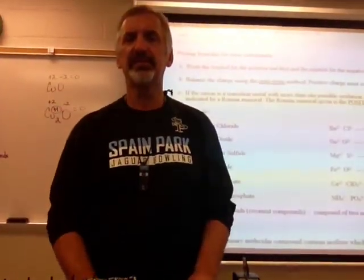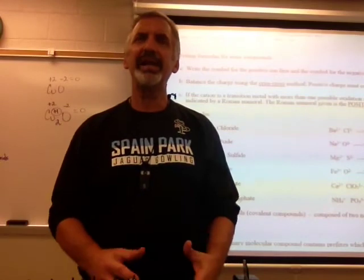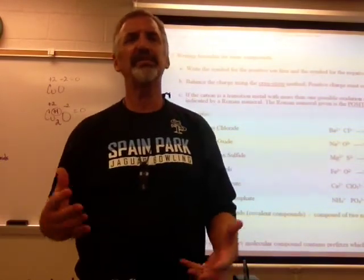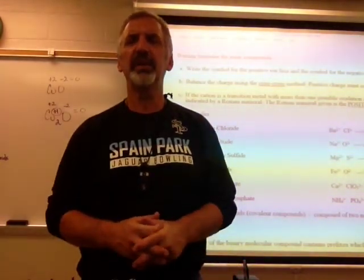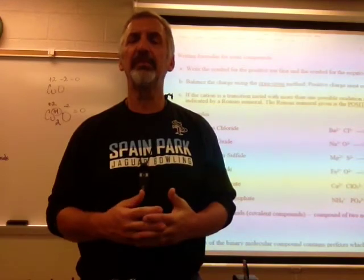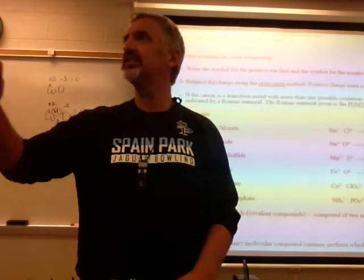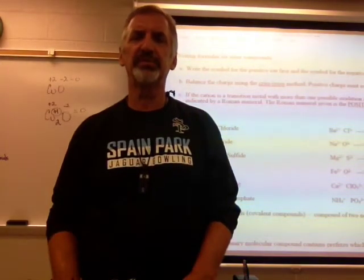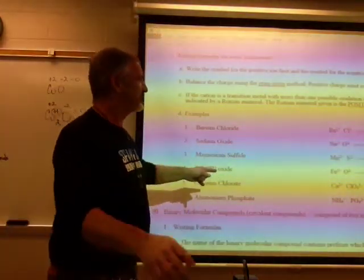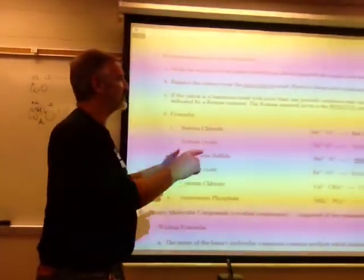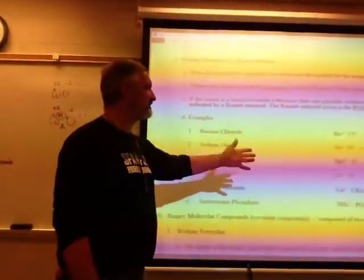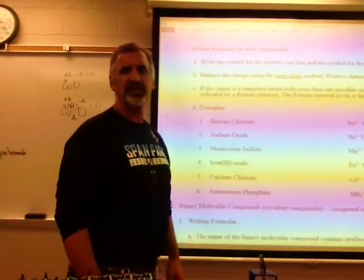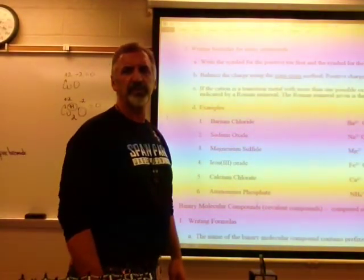For ammonium phosphate: ammonium is the only polyatomic cation, it's plus one. Phosphate is minus three. I need three of these positives to balance the minus three, so I put a parenthesis and a three around the ammonium: (NH4)3PO4. I don't put parentheses around the phosphate because there's only one phosphate. Only use parentheses around the substance that has more than one.